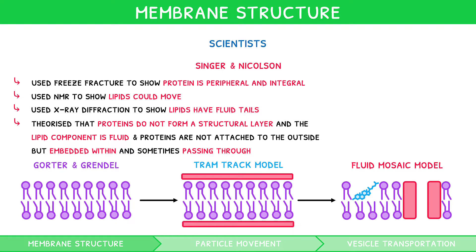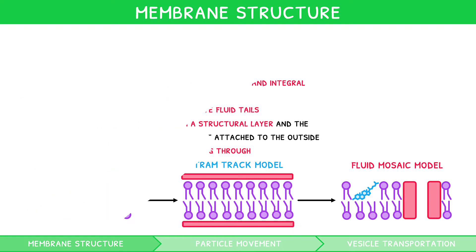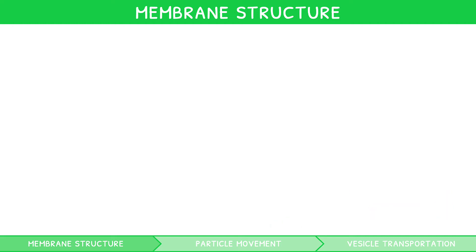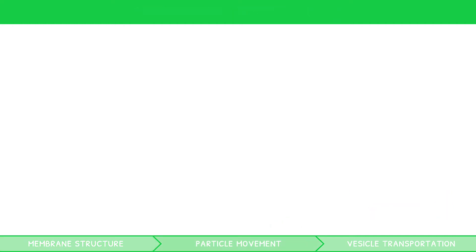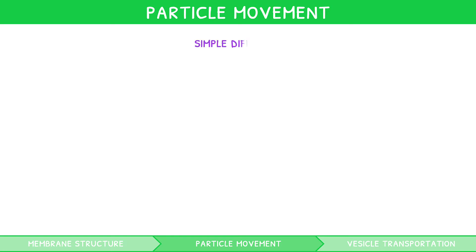We have now covered the structure of the membrane in good detail, but to understand how this relates to its function, we need to explore particle movement. The four main ways in which particles move are simple diffusion, facilitated diffusion, osmosis, and active transport.